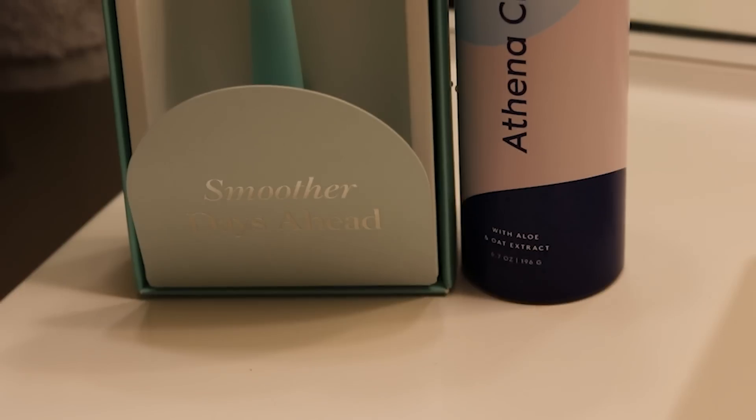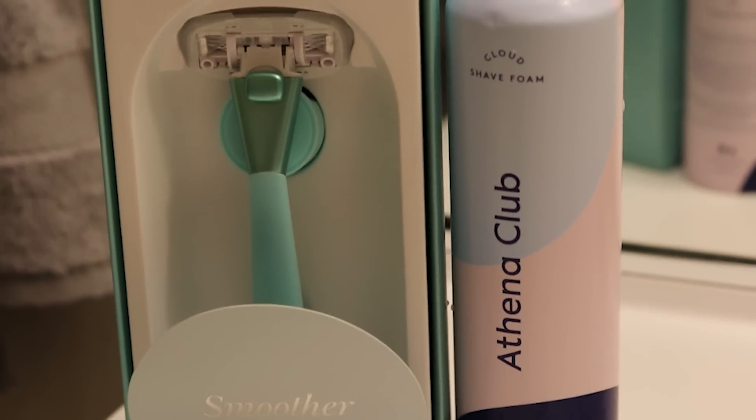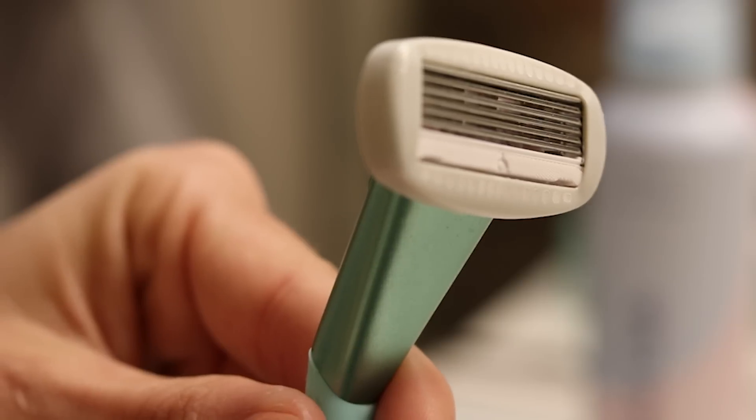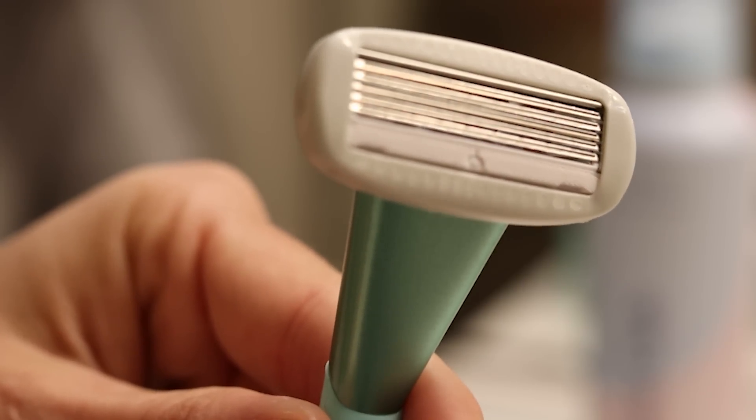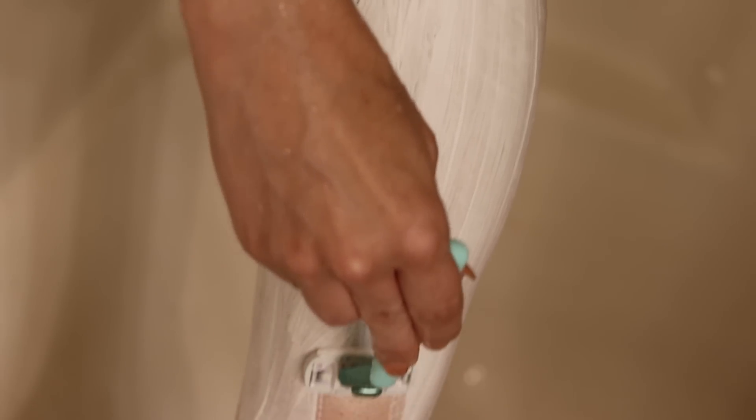Thankfully, Athena Club has saved the day whenever it comes to my shaving routine. The Athena Club blades are surrounded by a water activated serum made with hyaluronic acid and shea butter, which offers lasting hydration and also a super smooth shave that prevents bumps and irritation. Something that I have personally always struggled with, but no more.